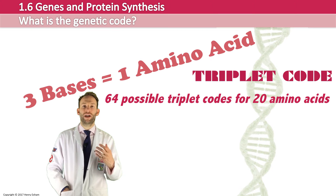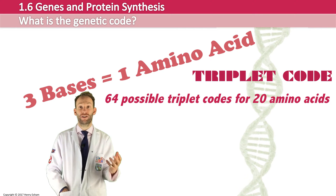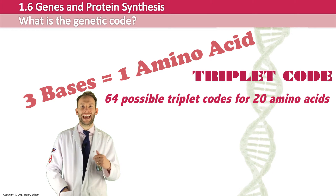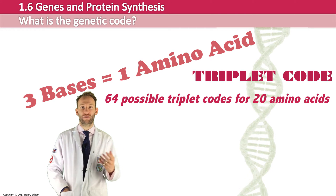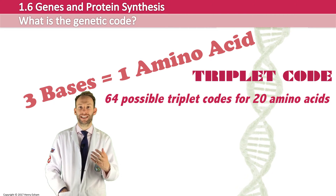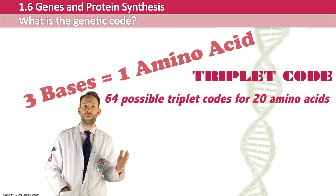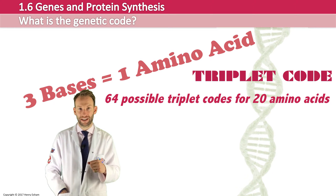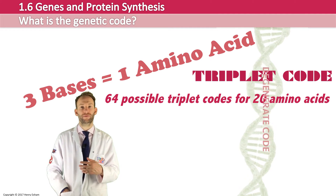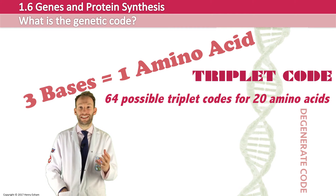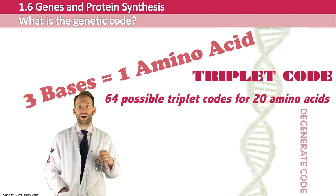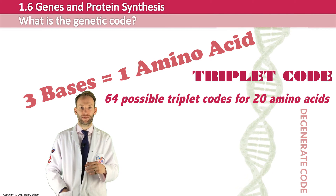We only need 20 amino acids, so there are actually a lot more combinations than there are amino acids. This is quite a good thing — for example, TGA, TGG, TGT, and TGC all code for the amino acid threonine. This actually protects the organism a little bit, because if you get a mutation — a change in the DNA — it doesn't always lead to a new amino acid. This is what we call the degenerate code. Most of your DNA doesn't even code for proteins; it actually regulates when other genes are read and when to make various proteins.